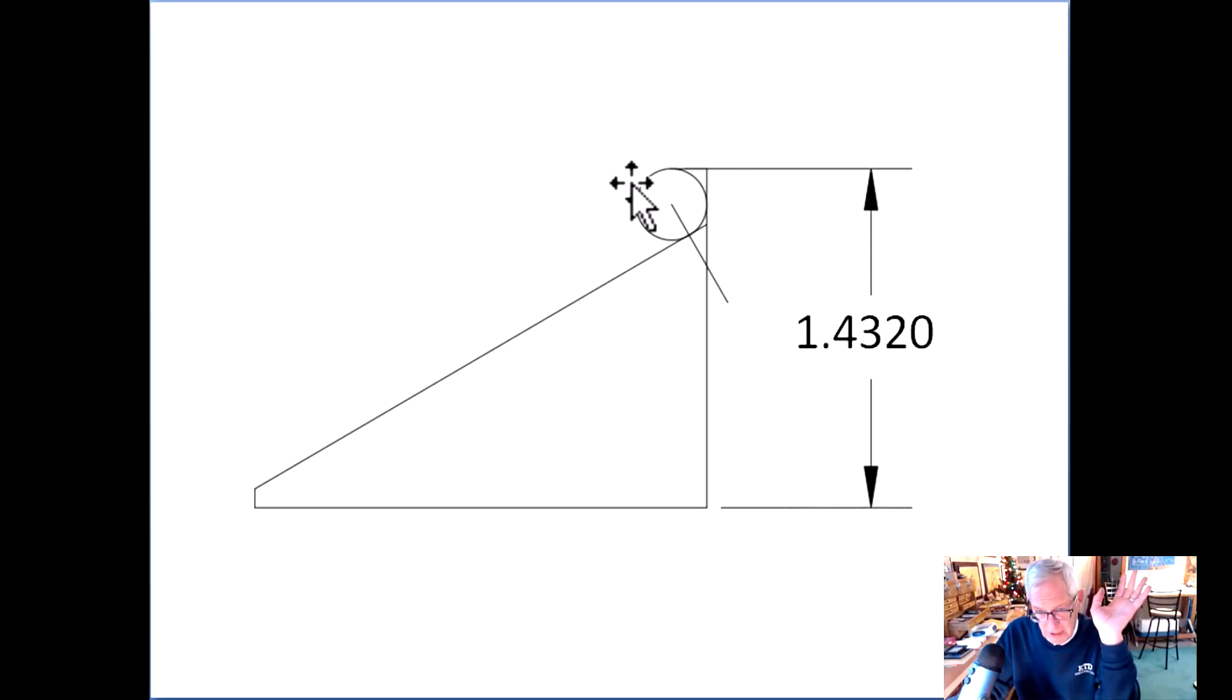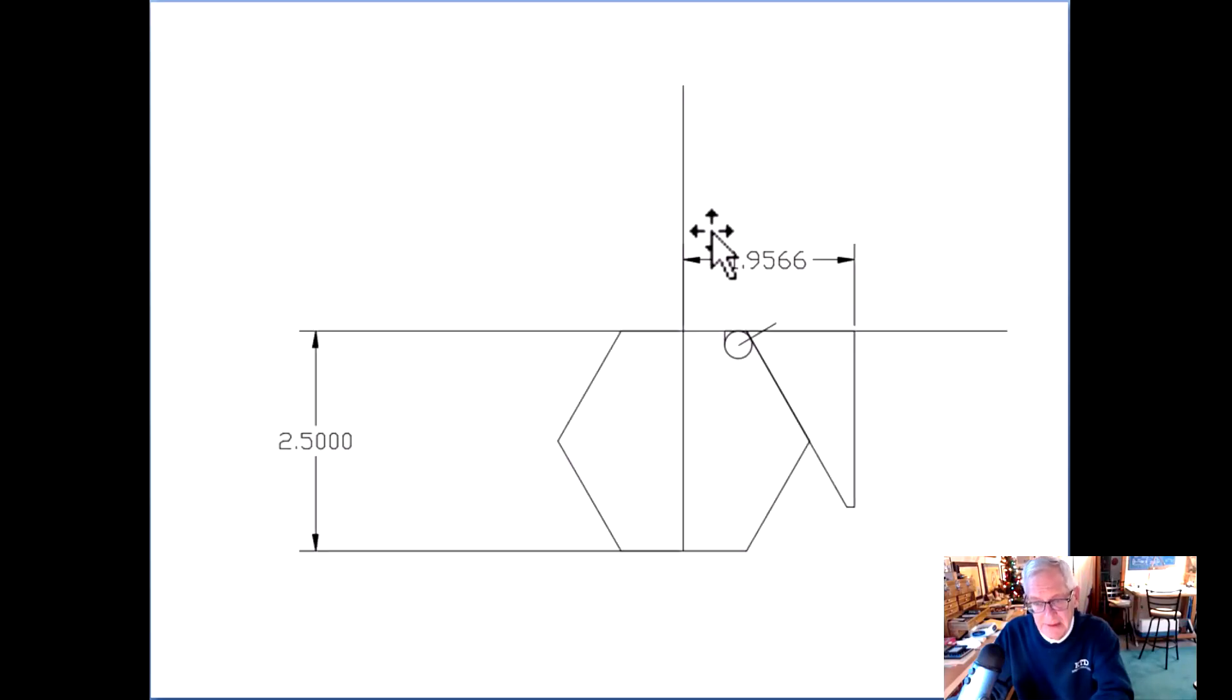But what I really want to know is what it is from here to the theoretical sharp. Why is that important? Well what if there was a sixteenth radius on there? You couldn't just touch here and measure there. What we're trying to establish is that theoretical point.